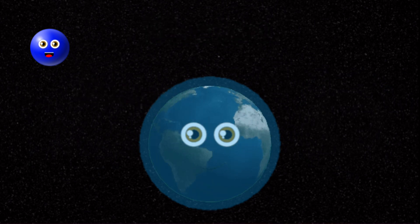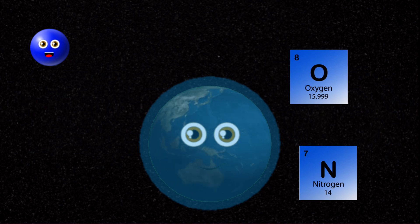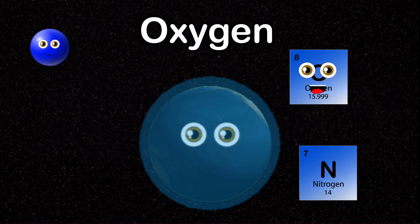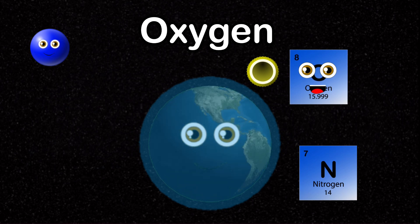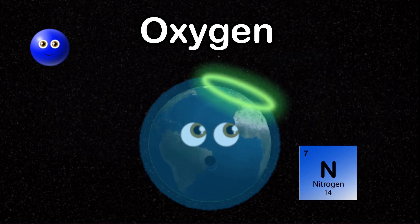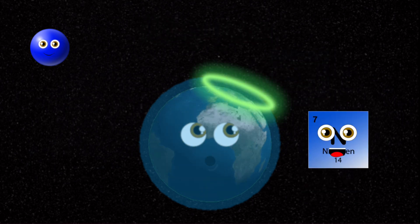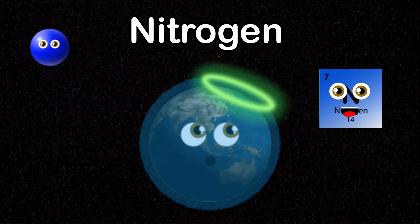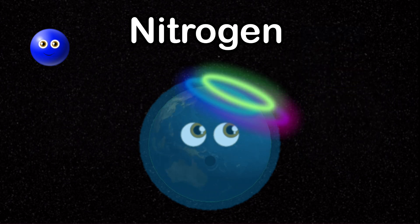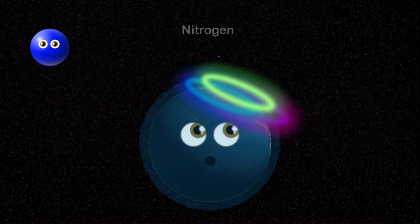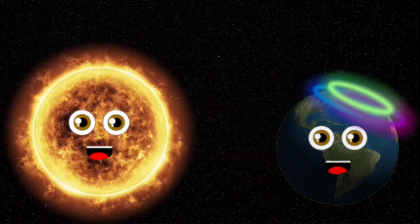When a photon hits earth's atmosphere, which is made up of air including oxygen and nitrogen, the gases will flare. I am oxygen — when a photon collides with me, I spark the color in the aurora that is seen as green. My name is nitrogen — when a photon hits me, my color is blue.